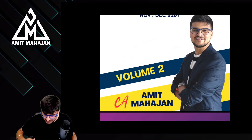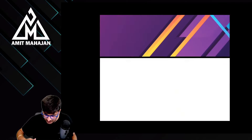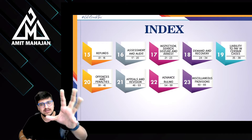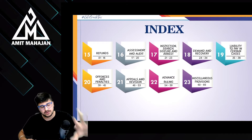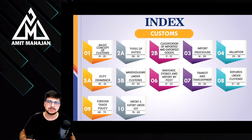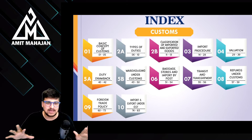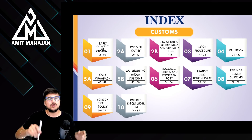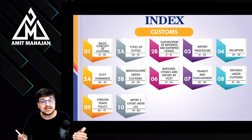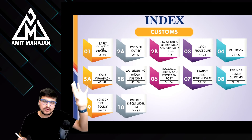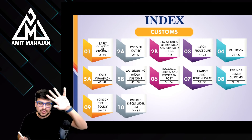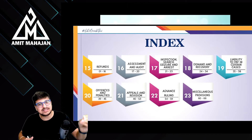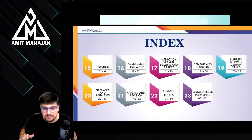So what are the theory chapters? Theory chapters are: refund, assessment and audit. And then customs comes later. Now, the first and most common mistake that everyone makes is spending too much time on the first module. In module one, you end up putting in so much time that because of that, you are not able to focus on the GST theory chapters.